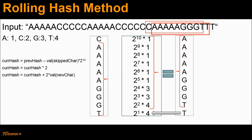So just to recap: we had the previous hash value computed for the old sequence. For the new sequence, we knew the newly added character — that was T — and the skipped character — that was C. Knowing these values, we computed the current hash value using the previous hash value. I hope you are now able to understand how to compute the new hash value from the previously computed hash value.